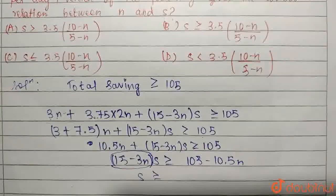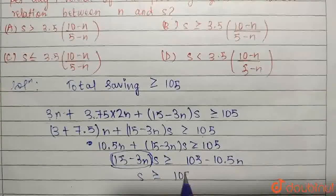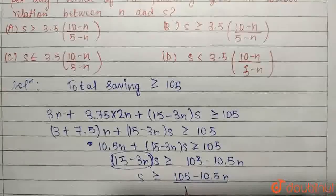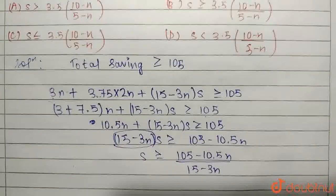I can write S greater than or equal to 15 minus 3N comes here and gets divided here, 105 minus 10.5N divided by 15 minus 3N.